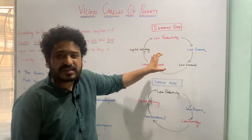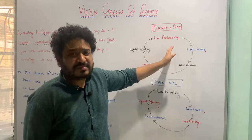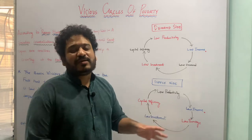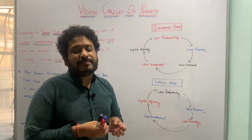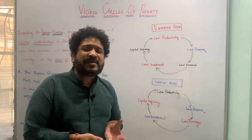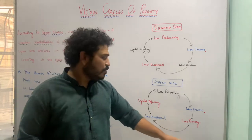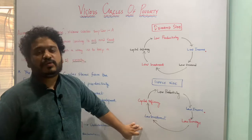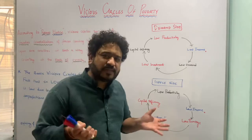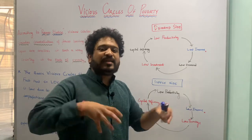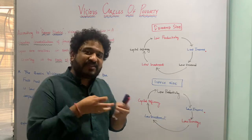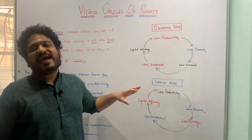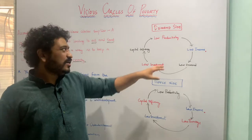On the supply side, lower income leads to lower savings, because since income is low, a part will be spent on consumption and a smaller part will be saved. These lower savings translate into lower investment — just as lower demand did on the demand side. Savings from the general public normally go to financial institutions and are used for productive activities, but with low savings, investment goes down, leading to capital deficiencies and ultimately low productivity.